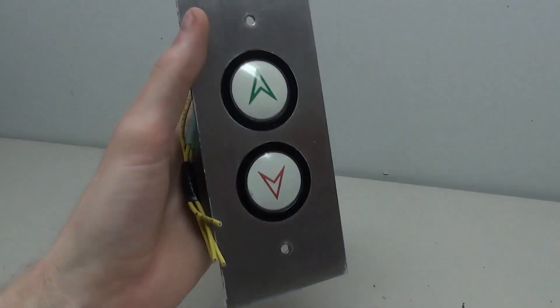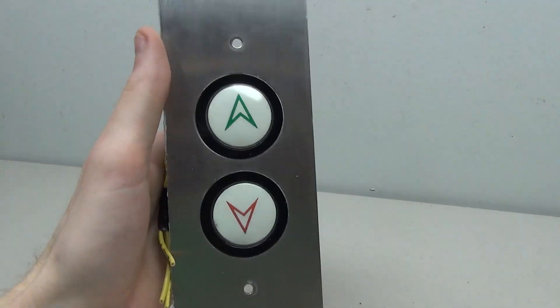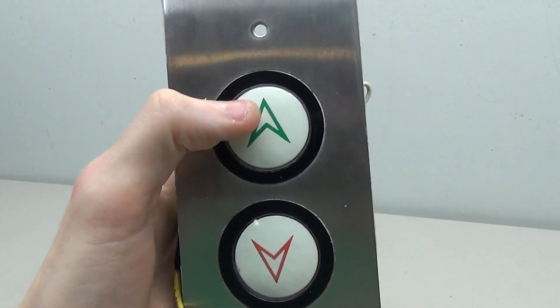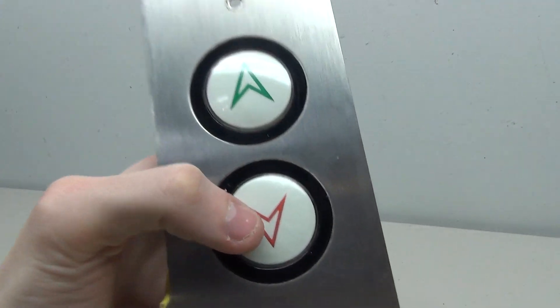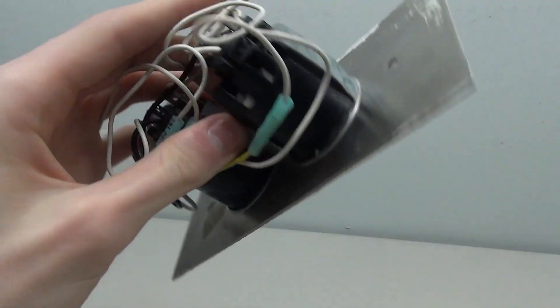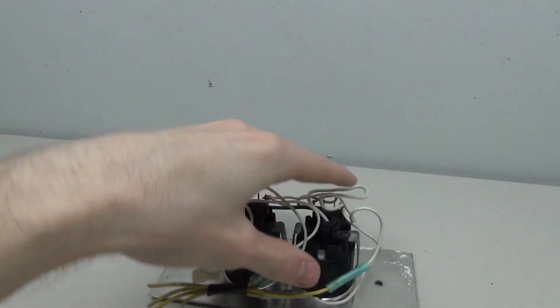So the call button itself is very small. And generally speaking, these US call buttons are quite small. This was an intermediate one. So there's the up button, which has the green arrow and down with the red arrow. And turning it to the back, we can see how these buttons are put together.